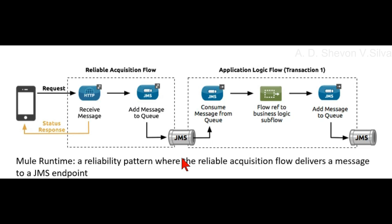We can also use JMS as an endpoint, as shown here. JMS enables persistence and applies to both clustered and non-clustered environments, but requires additional software such as a message queue server. Note that this comparison does not include any in-memory persistence setup for VM and JMS, because they can lose messages and are not considered reliable.